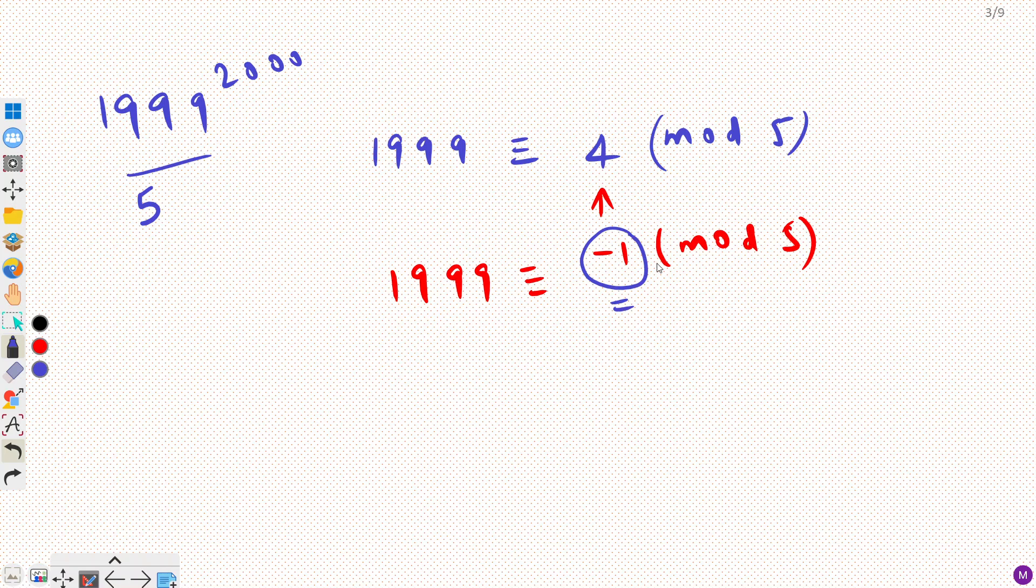Now I can raise it to as much big power as you want right. So we want to raise it to 2000. So if I raise it to 2000 then I can raise this also to 2000. From here can I say that this is even power so can I say that this would become 1.